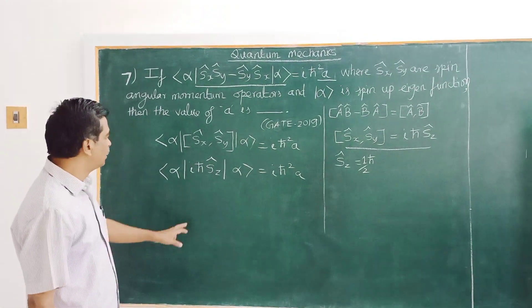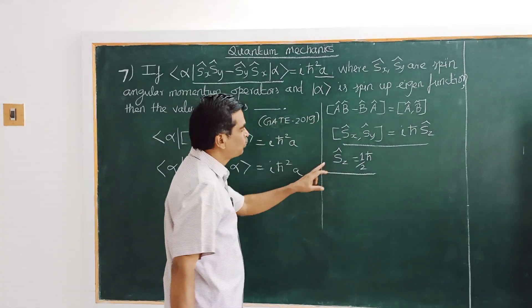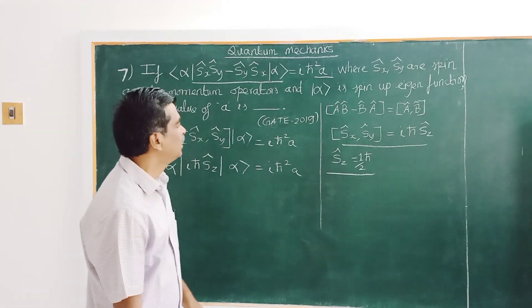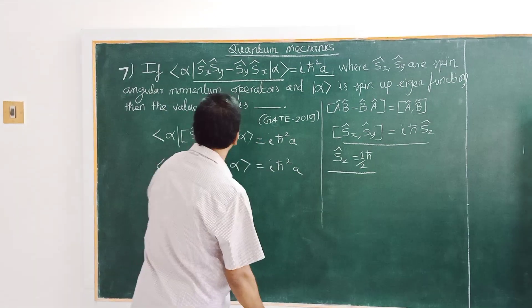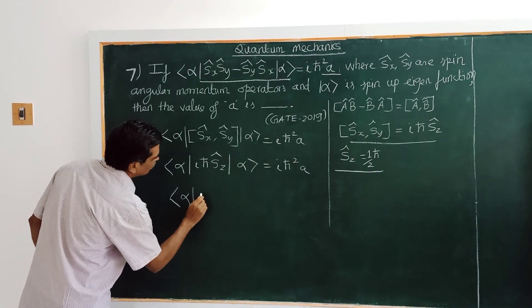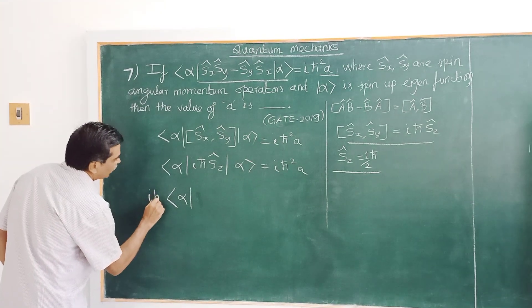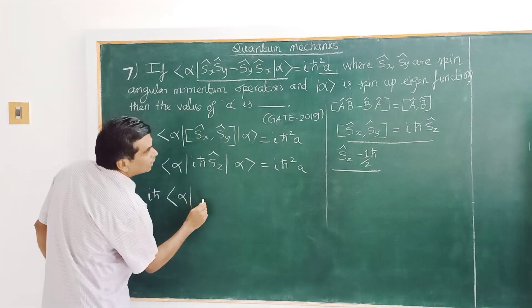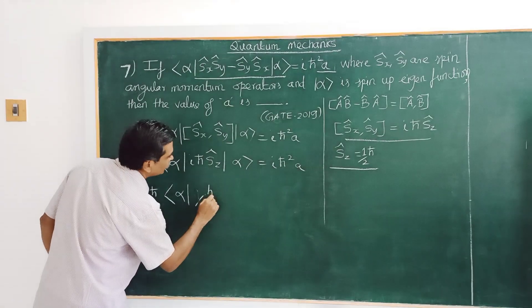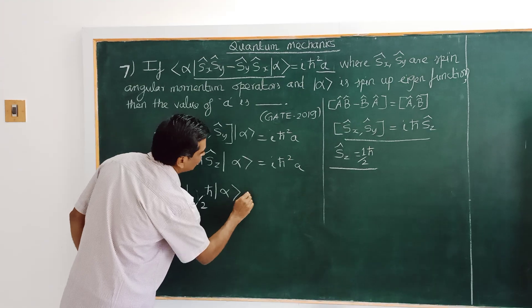Okay, now the value of the spin angular momentum vector along the Z axis is equal to 1 by 2 ℏ cap. So we have given here, we can take it out and substitute here. We can take it out here, i X cap, then ℏ by 2 ℏ cap alpha equal to iℏ.